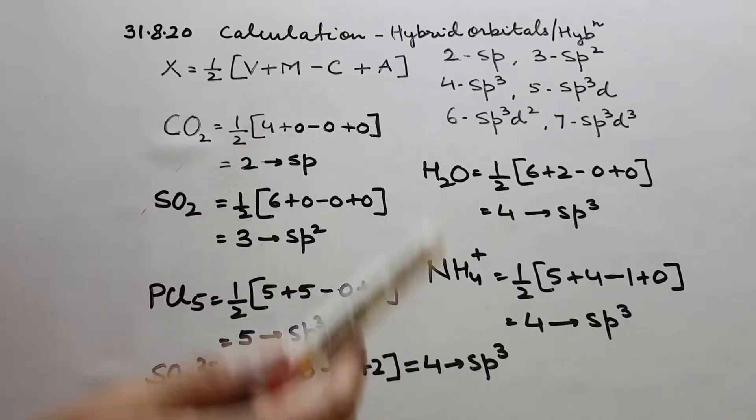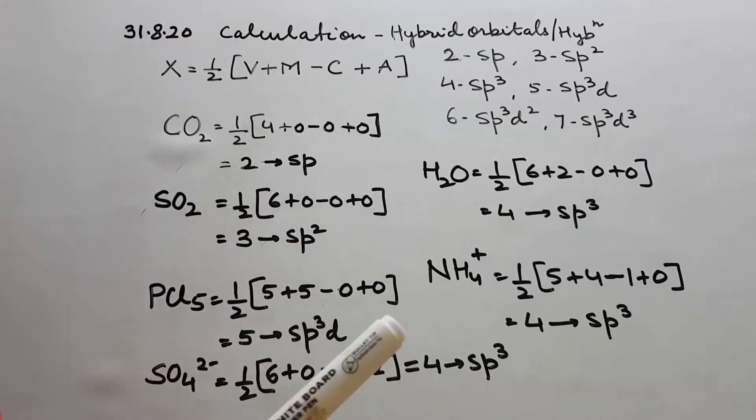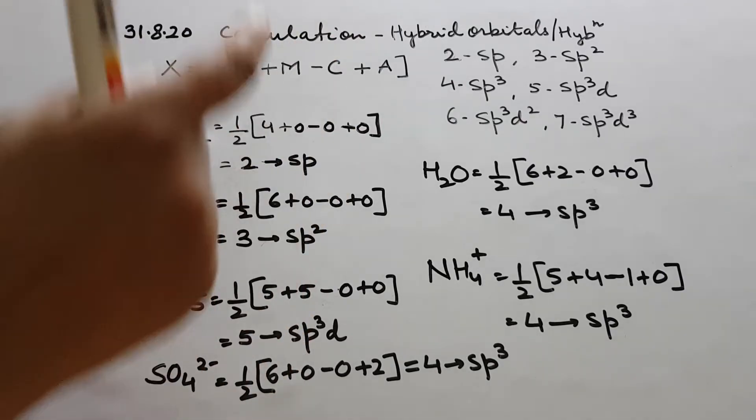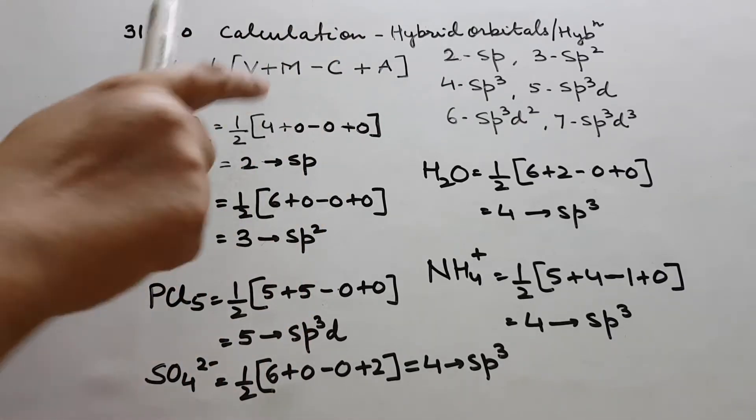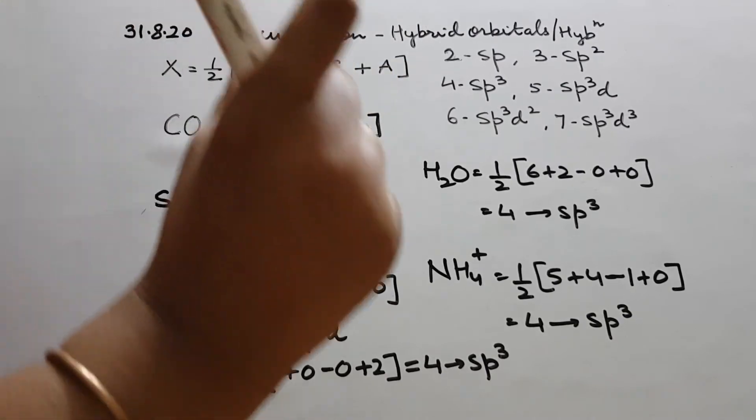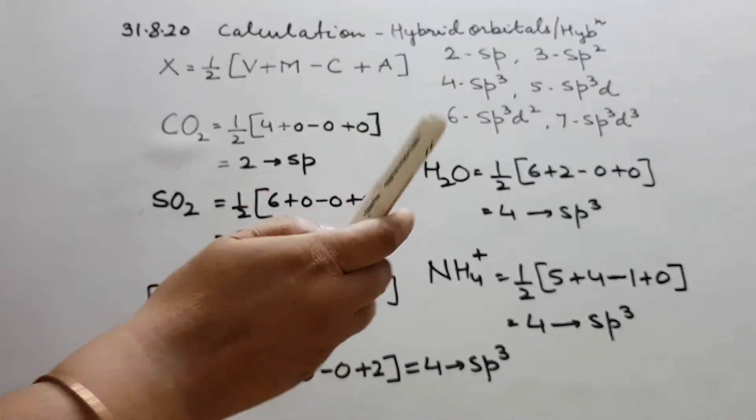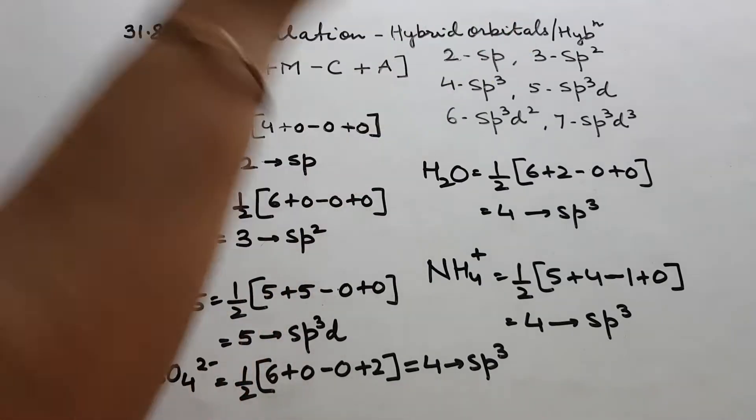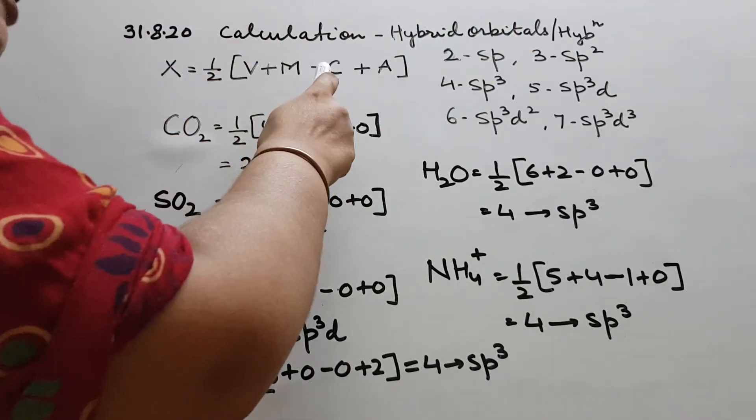Minus c. c is the charge on cation. I gave the formula last time only. Say for ammonium charge is plus 1, but here we just will see the numerical value not plus minus. Charge on cation, so it will be minus. If it is ammonium, the value will be 1.